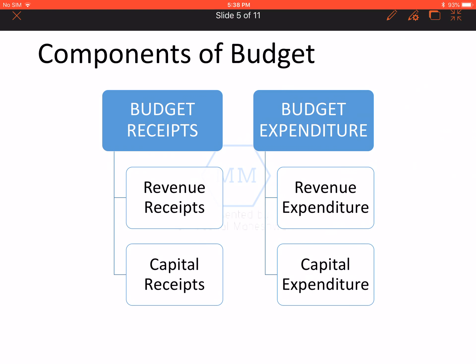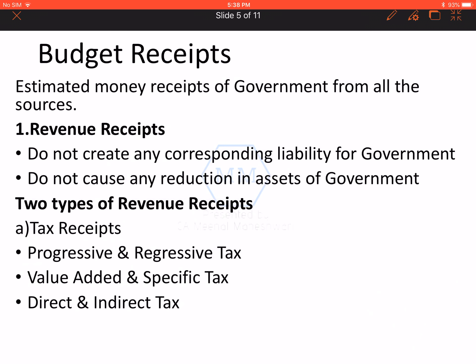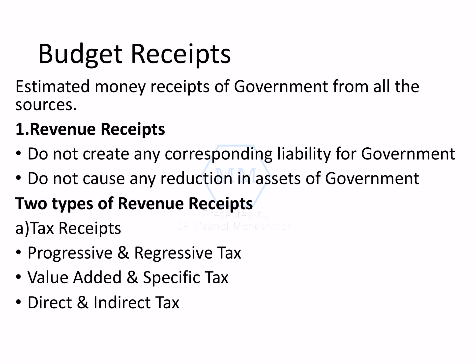Now, coming on to what are the components of government budget. There are two components: budgetary receipts and budgetary expenditure. There are two types of receipts and expenditures — revenue receipts, capital receipts, revenue expenditure, and capital expenditure. Let's start with the first, that is budget receipts.